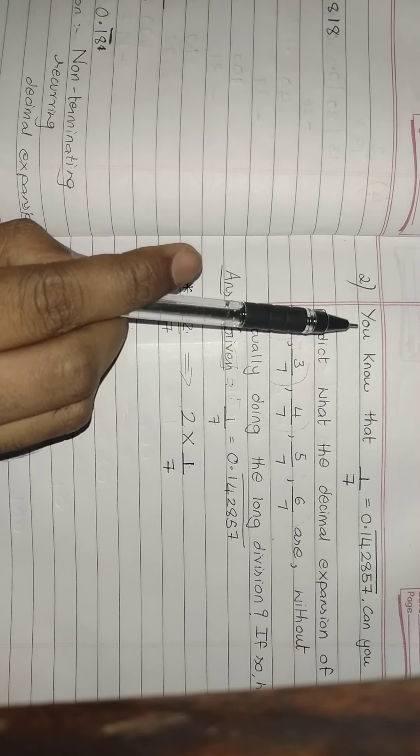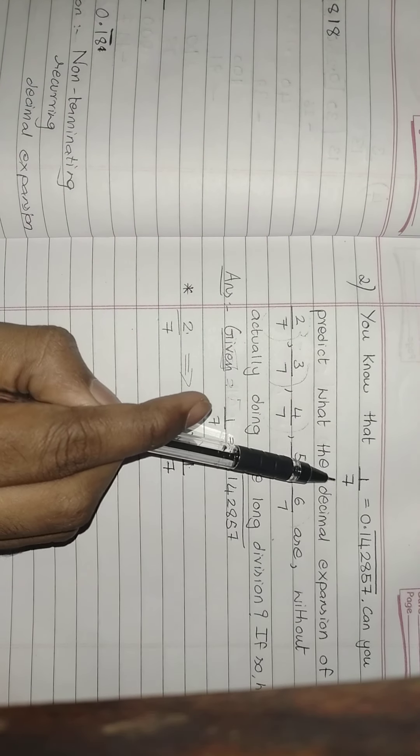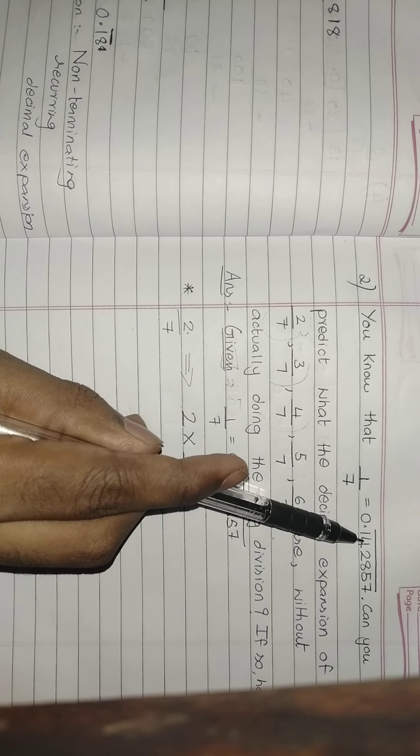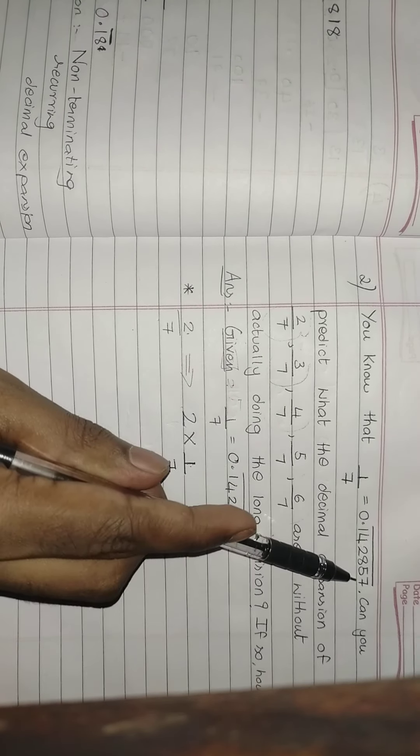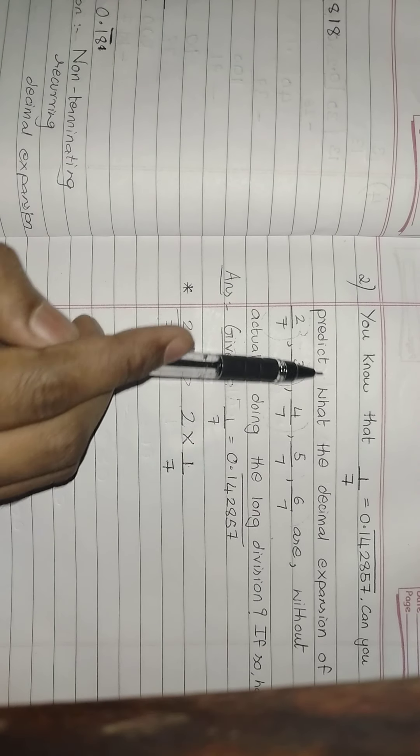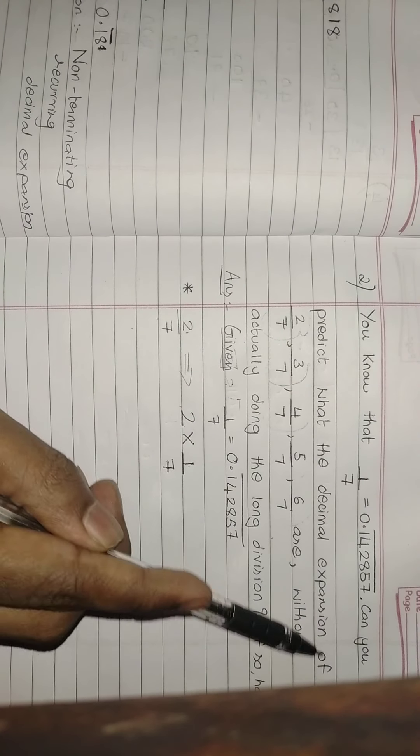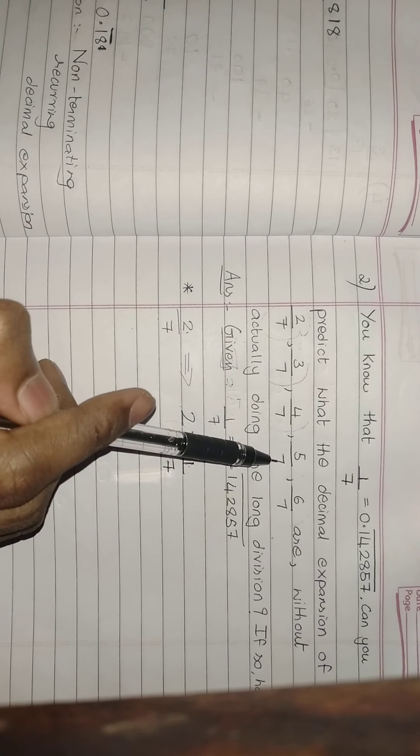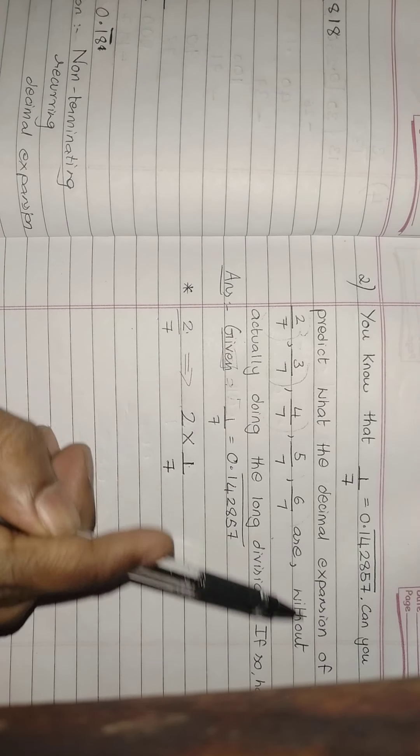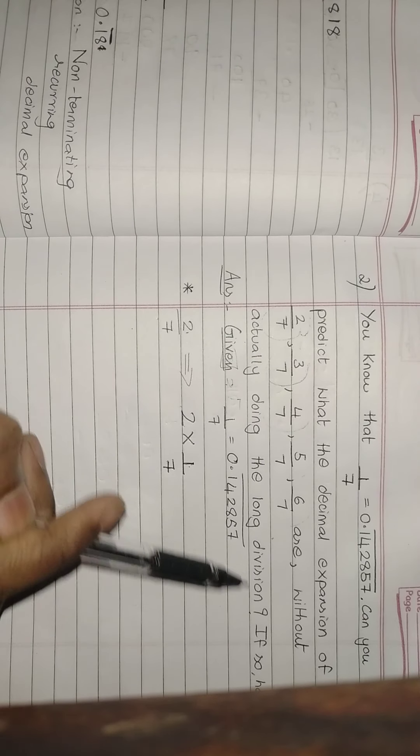So, all of you copy the second one. You know that 1 by 7 equals 0.142857 under bar. The bar represents these numbers are repeated. Can you predict what the decimal expansion of 2 by 7, 3 by 7, 4 by 7, 5 by 7, 6 by 7 are without actually doing the long division?